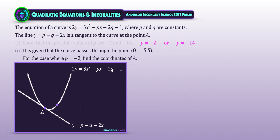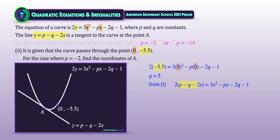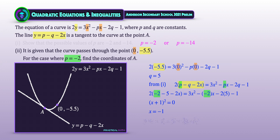In part 2, given the curve passes through (0, −5.5), we replace y = −5.5 and x = 0 into the curve equation. Solving for q gives q = 5. Next, we reuse the quadratic equation from part 1, where the tangent was substituted into the curve, since both pass through point A. Replacing p = −2 and factorizing the quadratic gives x = −1. Substituting x = −1, p = −2, and q = 5 into the tangent equation gives y = −5. The coordinates of A are (−1, −5).